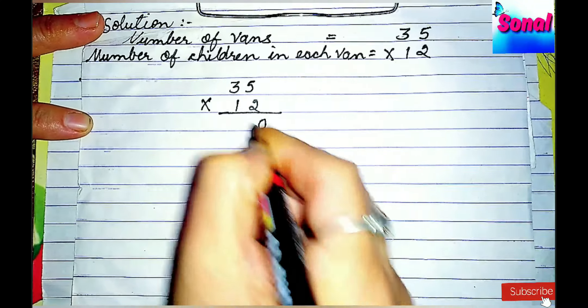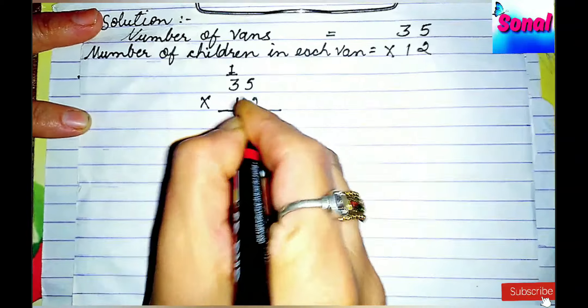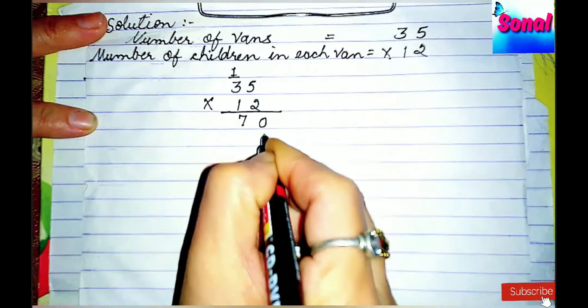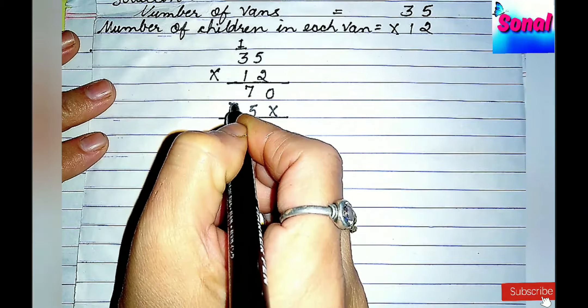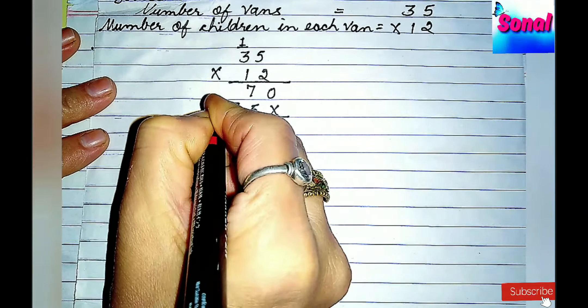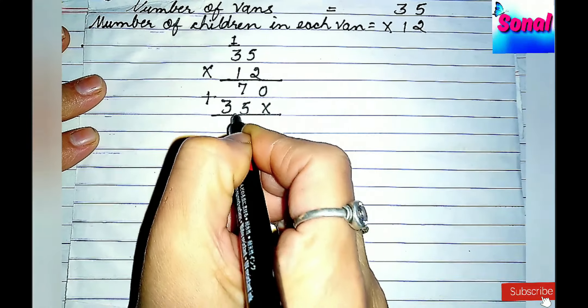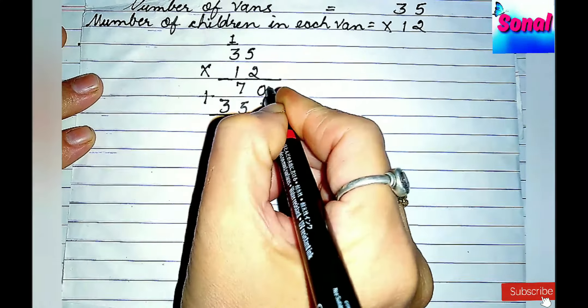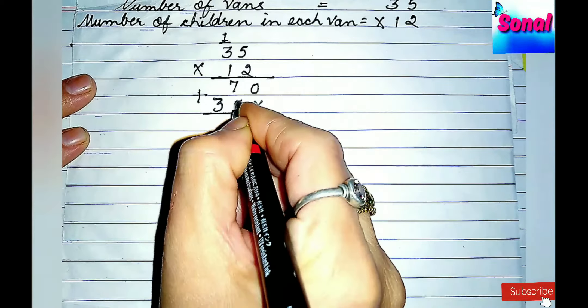5 times 2 is 10, write 0, carry over 1. 3 times 2 is 6 and 1 is 7. 5 ones are 5, 3 ones are 3. Now, we will add 70 and 35. Zero and cross, add kara 0 aya.